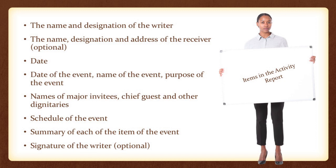We are today going to take a look at an event activity report which is to be submitted to a senior and what it includes. Generally, an event activity report includes the name and the designation of the writer of that report. It also may include, if asked for, the name, designation, and address of the receiver, if there is a fixed receiver for that particular report. The date of submission, date of the event, name of the event, number of people attending the event, and purpose of that event should all be mentioned right at the beginning of the report.